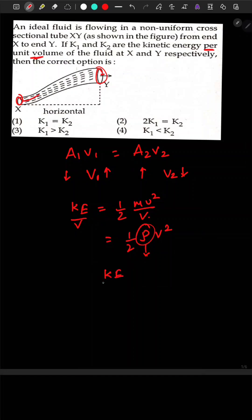So kinetic energy per unit volume is now directly proportional to the square of velocity. Here, V₁ is greater than V₂, therefore K₁ will be greater than K₂.